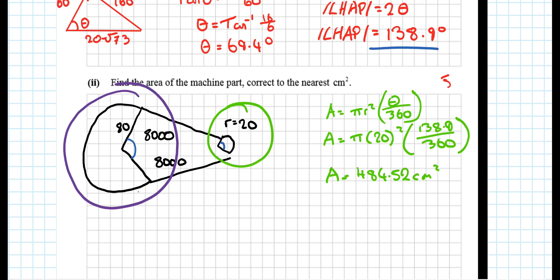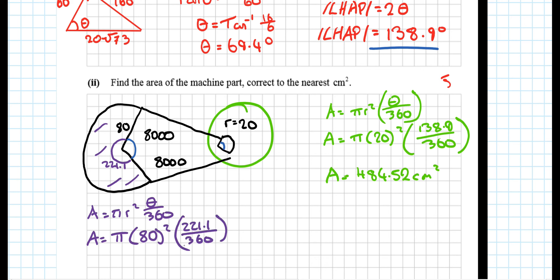If we're looking at the big area at this end. Well, I know that blue angle. I know the blue angle is 138.9. So that means this angle here is going to be 360 minus 138.9. So this purple angle is 221.1. So then this area here is going to be pi r squared theta over 360. Pi, the radius was 80 because it was 4r. 80 squared theta over 360. And theta in this case is 221.1 over 360. The area is 12,348.55 centimeters squared.